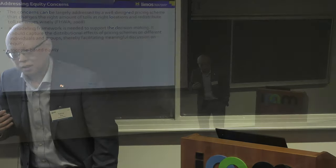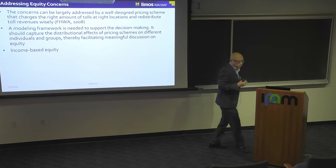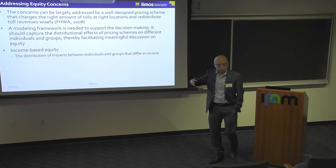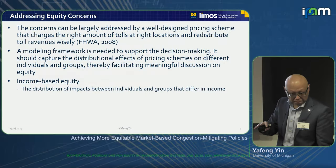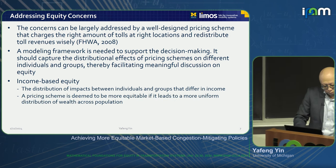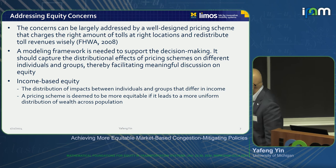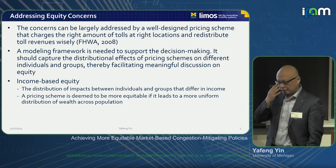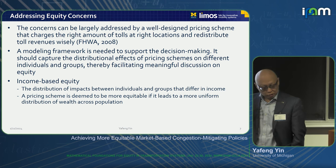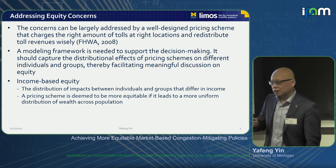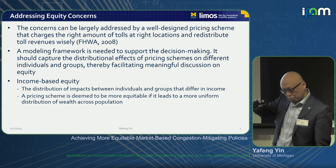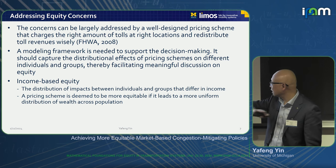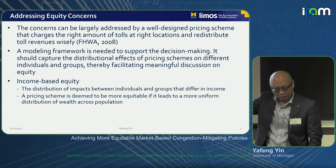Let's talk about income-based equity, because that is the primary concern we just discussed. It's really about the distribution of impact between individuals and groups that differ in income. A pricing scheme is deemed more equitable if it leads to a more uniform distribution of wealth across populations. That's my working definition of income-based equity. You can group people spatially or in other ways — the modeling framework can accommodate that — but for now, let's use this: a more equitable pricing scheme leads to a more uniform distribution of wealth across populations.